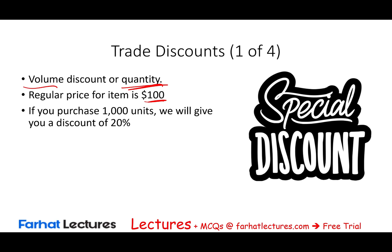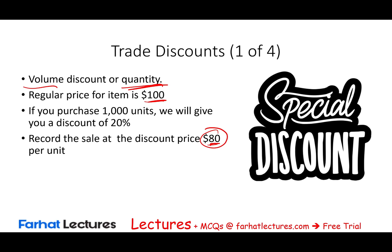So if we purchase 1,000 units at 20% off a $100 catalog price, we record the sale at $80. As far as both the buyer and seller are concerned, the transaction took place at exactly $80. We don't care what the catalog price is — what we care about is how much we actually sold it for: $80.